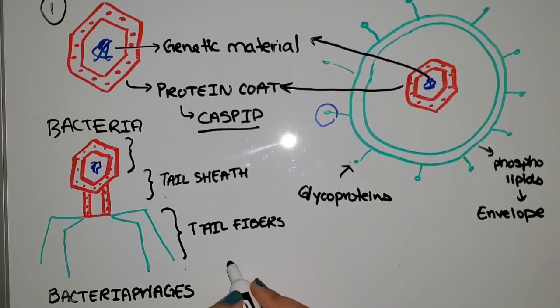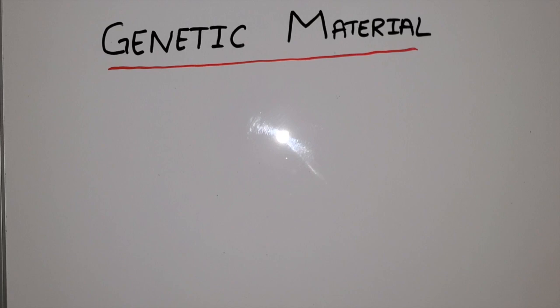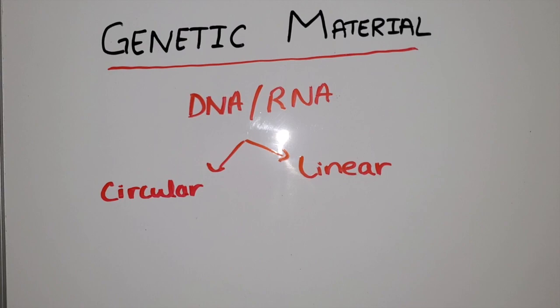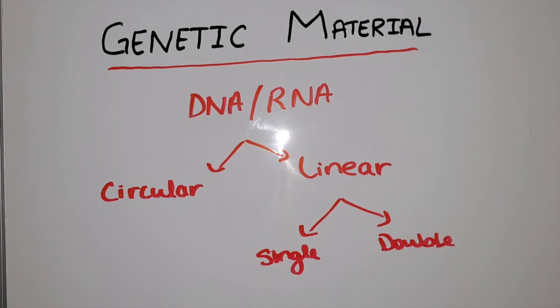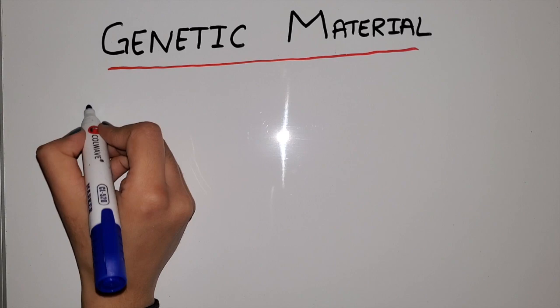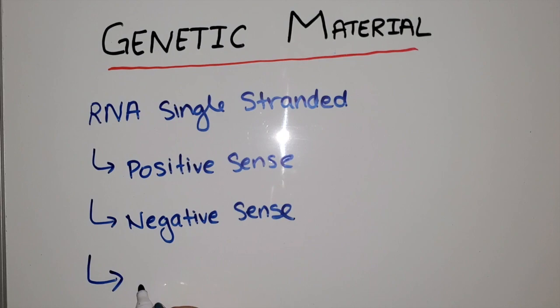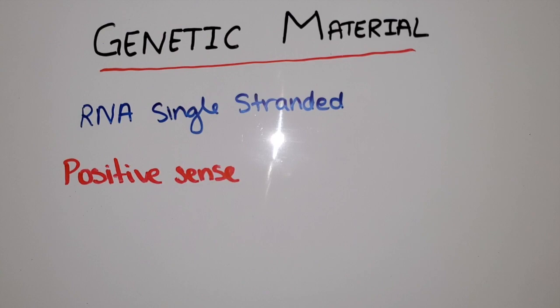Viruses incorporate genetic material into their host cell, and that genetic material cannot be replicated on its own — they need the host cell. Now, what is this genetic material? It could be DNA or RNA. It could be linear or circular. If it's linear, it could be single-stranded or double-stranded. Everything else is pretty straightforward except RNA single-stranded, which can be positive sense or negative sense, or the virus could be a retrovirus. Positive sense is very similar to mRNA — it just gets directly translated to proteins.